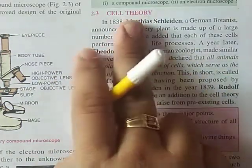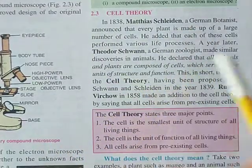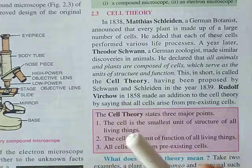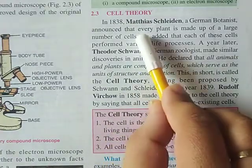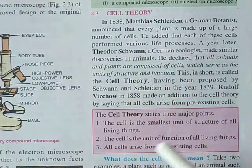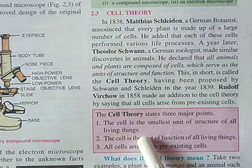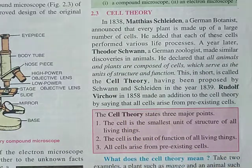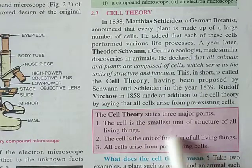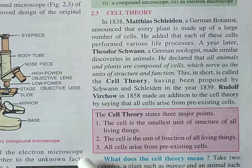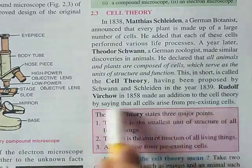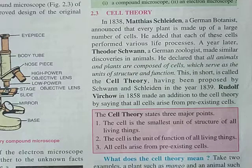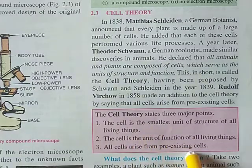The next topic is cell theory. Just remember three names: Schleiden, Schwann, and Virchow — three scientists who gave different points for cell theory, based on the study of plant and animal cells. Schleiden worked on plant cells and stated that every cell is the smallest unit of structure of all living things. Schwann, a zoologist, studied animal cells and said the cell is the unit of function of all living things. Virchow added that all cells arise from pre-existing cells. These are the three points of cell theory.